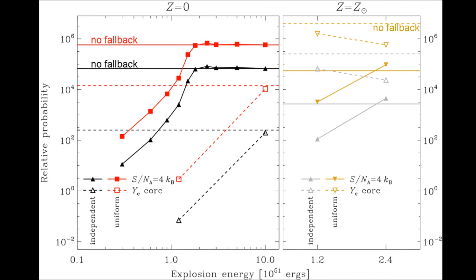Here we show the relative probability of the models as a function of the explosion energy. We show zero metallicity in the left panel and solar metallicity models in the right panel. High explosion energies are favored because they minimize fallback, thereby reducing the numbers of high mass neutron stars.